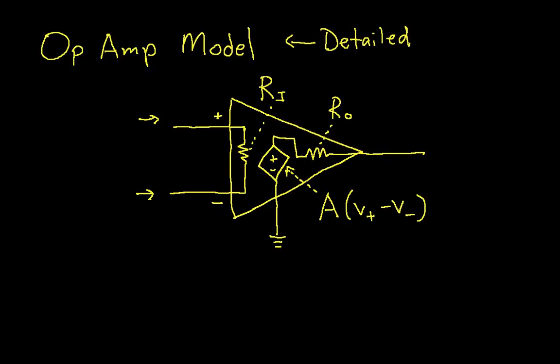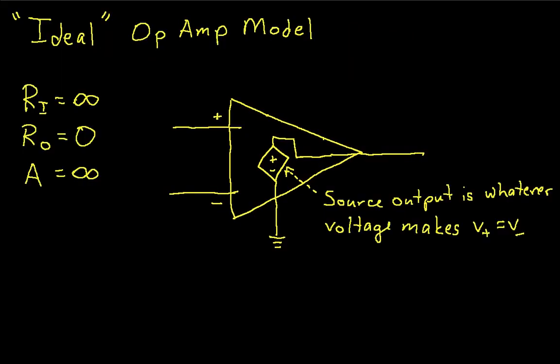In many applications, we don't have to worry about this detailed of a model. We can use what we call the ideal op-amp model. And the idea behind the ideal op-amp model is the input resistance is infinite, so it's like the two inputs just go to terminals inside the op-amp, and the output resistance is zero, so there's no output resistance, and the gain is infinite.